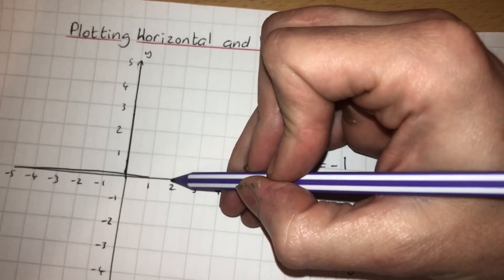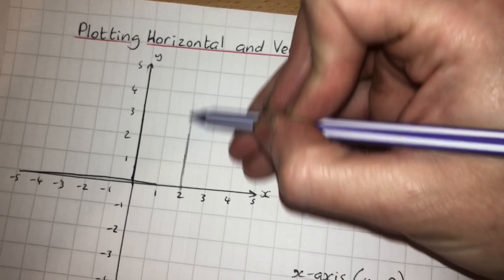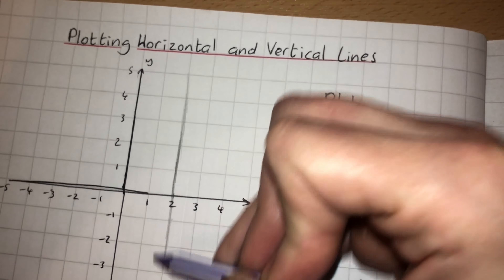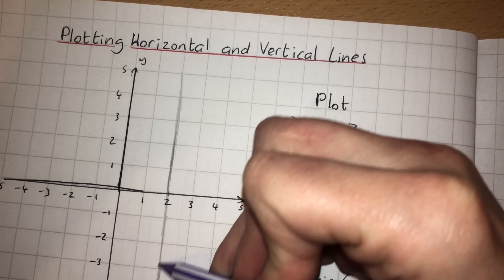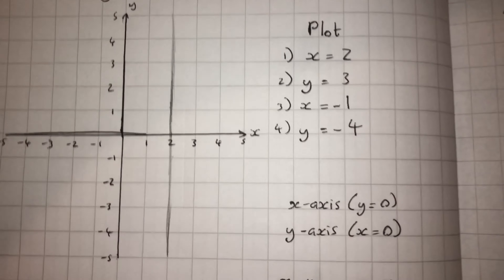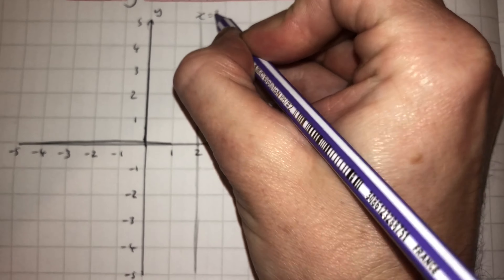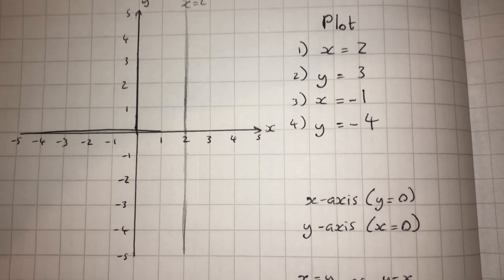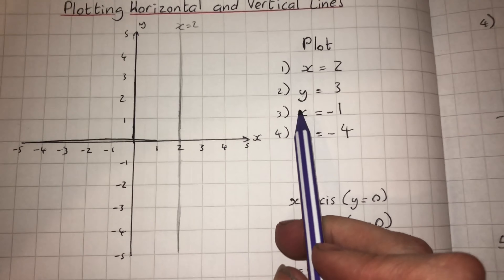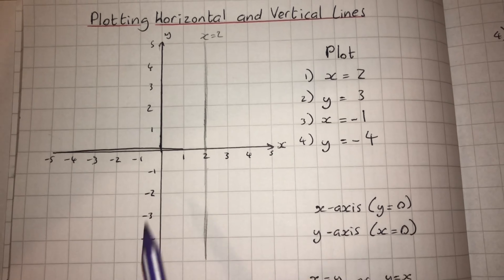Another important thing: in the exam, if you're drawing anything you need to use your ruler. I can't use a ruler here because I'm holding the phone to record with my left hand, but keep that in mind. So that is the line x equals 2. If it's a line x equals something, it gives us a vertical line, despite the x-axis itself being horizontal. The second line to plot is y equals 3 — we go to the y-axis and find where y is 3.